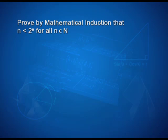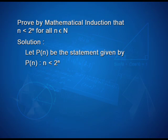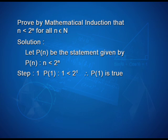Prove by mathematical induction that n is less than 2 to the power n for all n belonging to n. For the solution, let P(n) be the statement: n is less than 2 to the power n. In the first step, P(1) is 1 is less than 2, therefore P(1) is true.